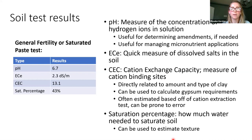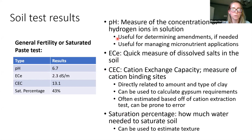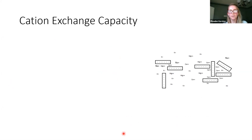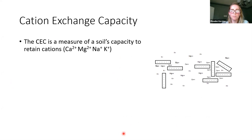The CEC estimation tends to be fine for most purposes. The saturation percentage is what you get from your saturated paste test—that's how much water is needed to get your soil to that point—and it can be used to estimate texture. The CEC is a measure of a soil's capacity to hold onto positively charged ions. In California, where soil pHs tend to be higher, the cations we typically talk about are calcium, magnesium, sodium, and potassium.